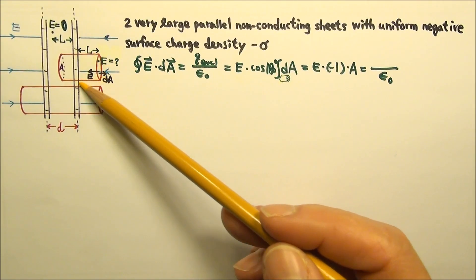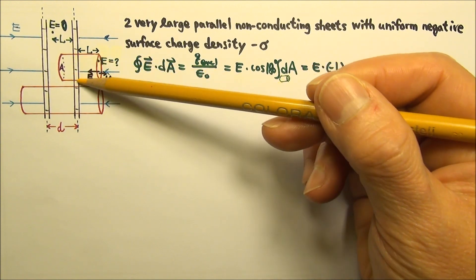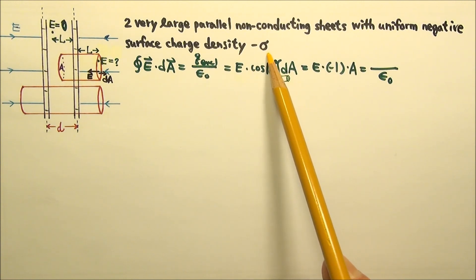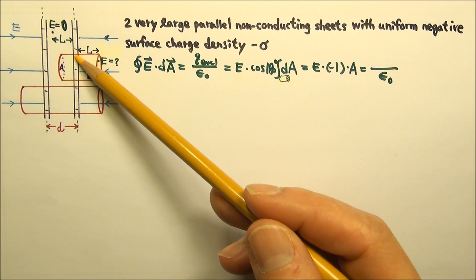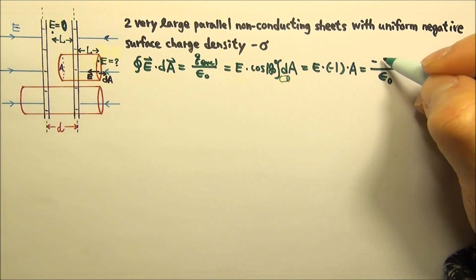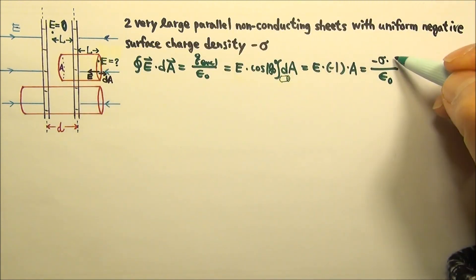Within the Gaussian surface, we only have charges on this part of a charged sheet. Since the surface charge density is negative sigma, we can multiply this surface density by the area. So q enclosed is negative sigma times this area is A.